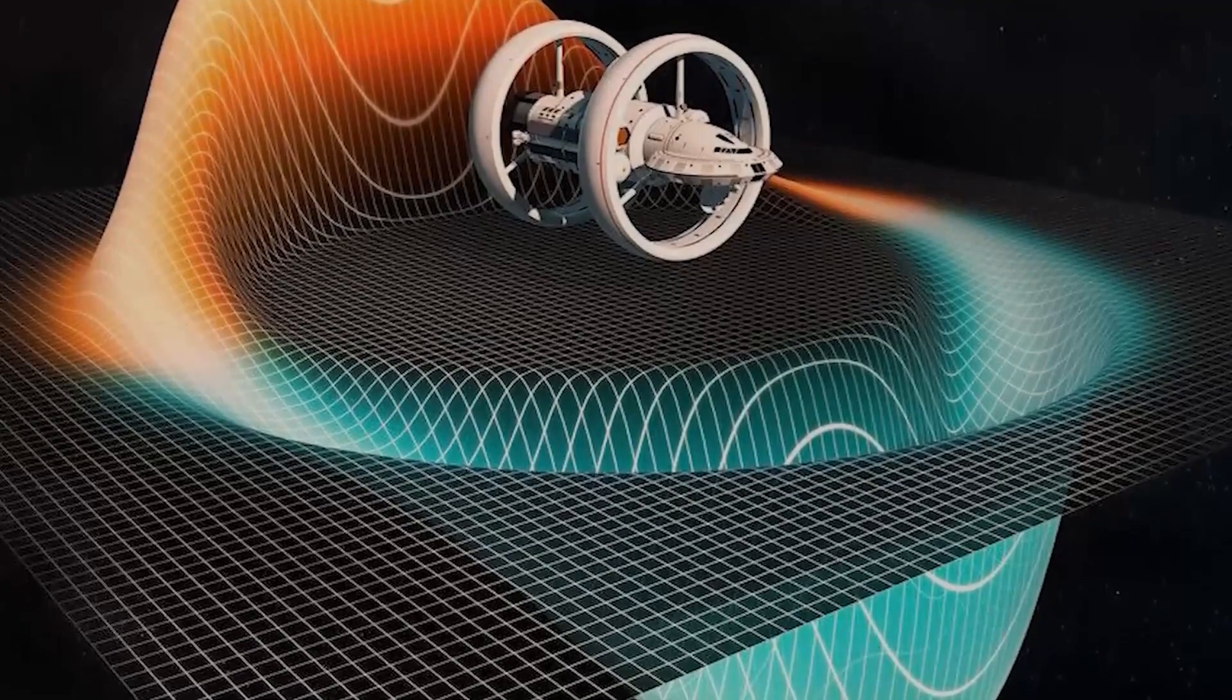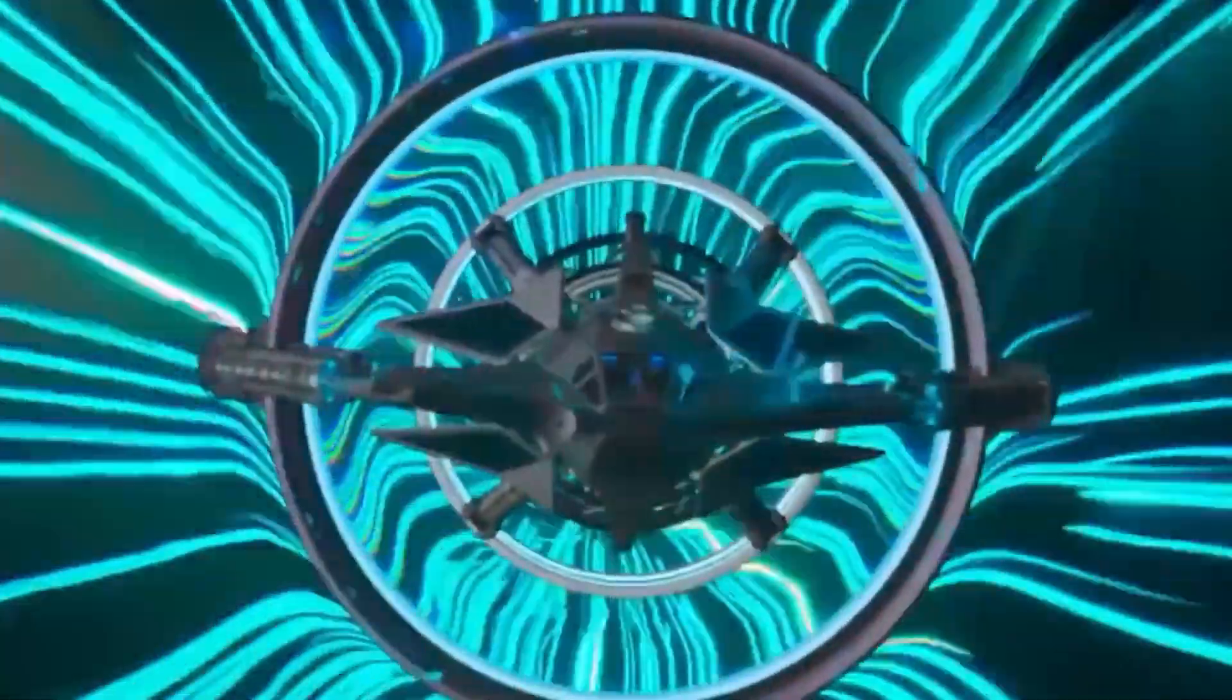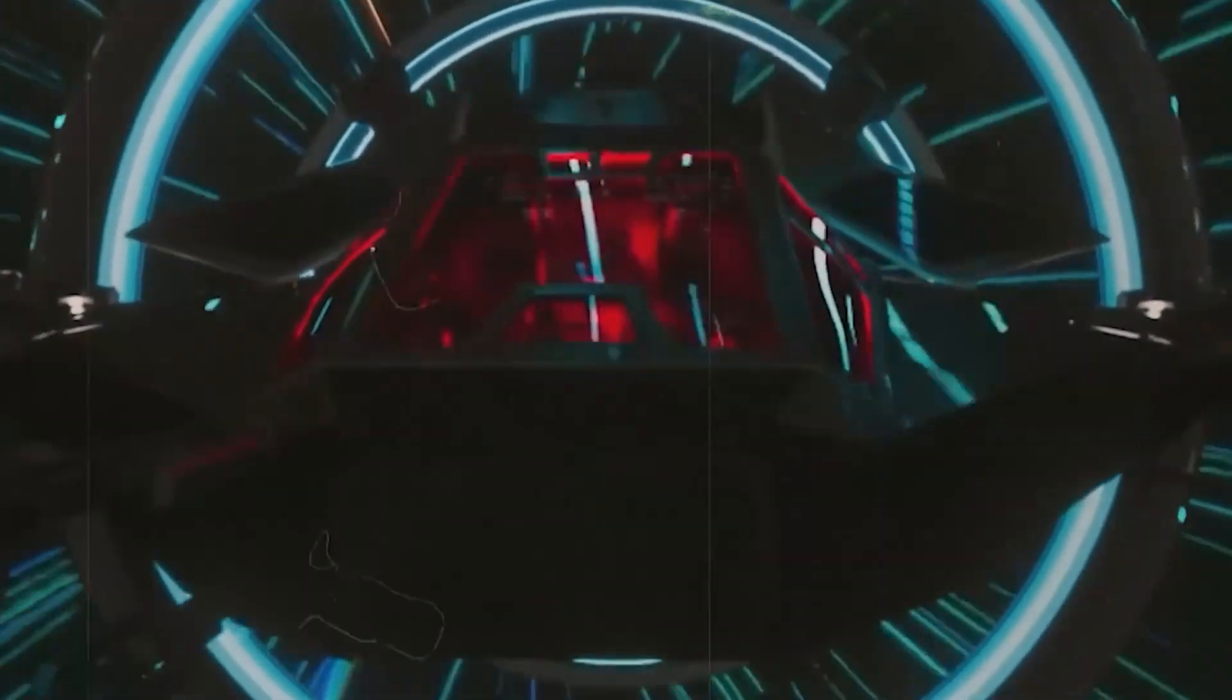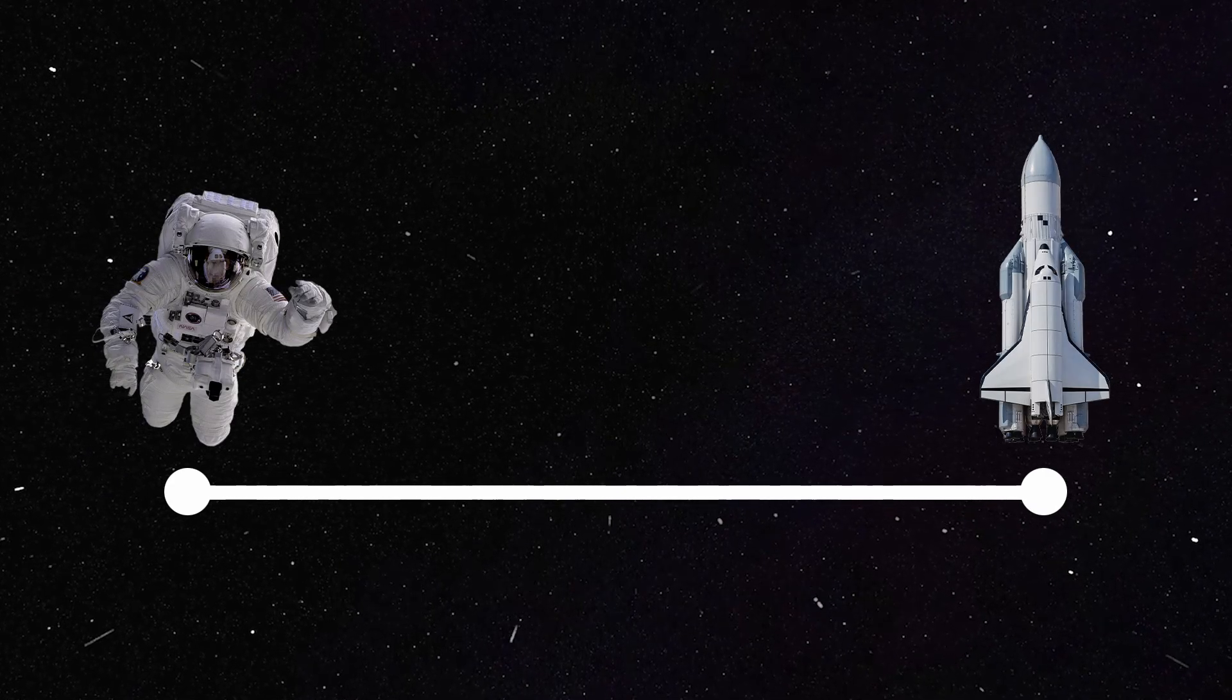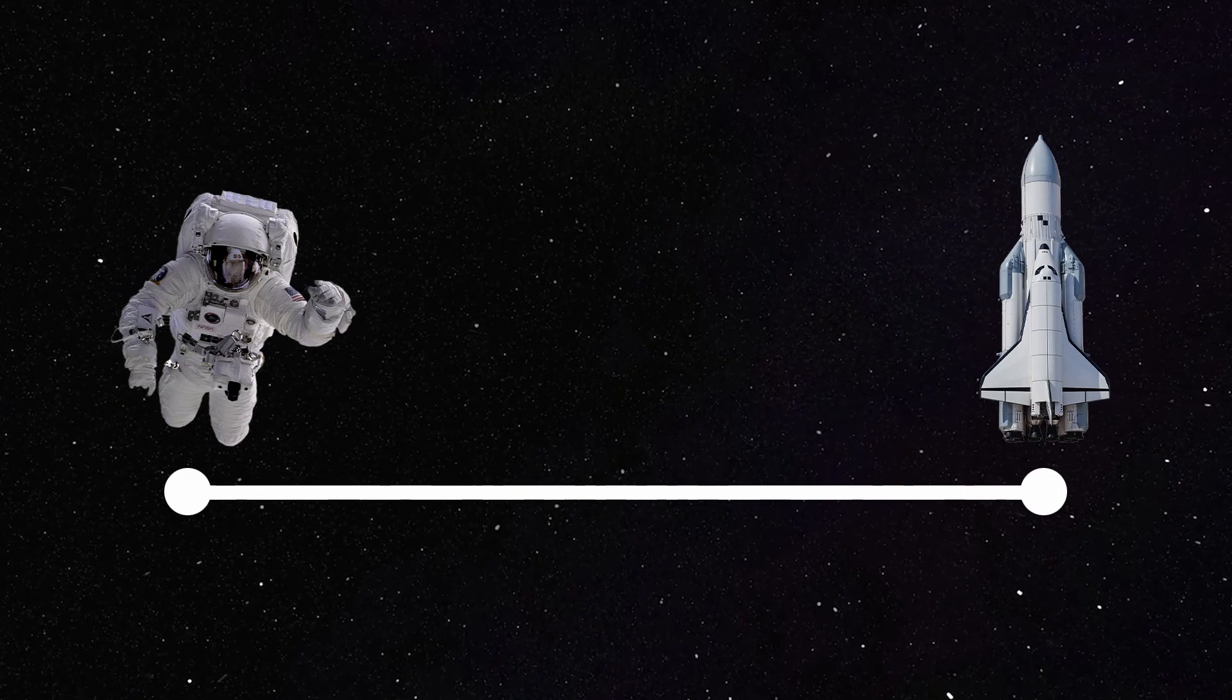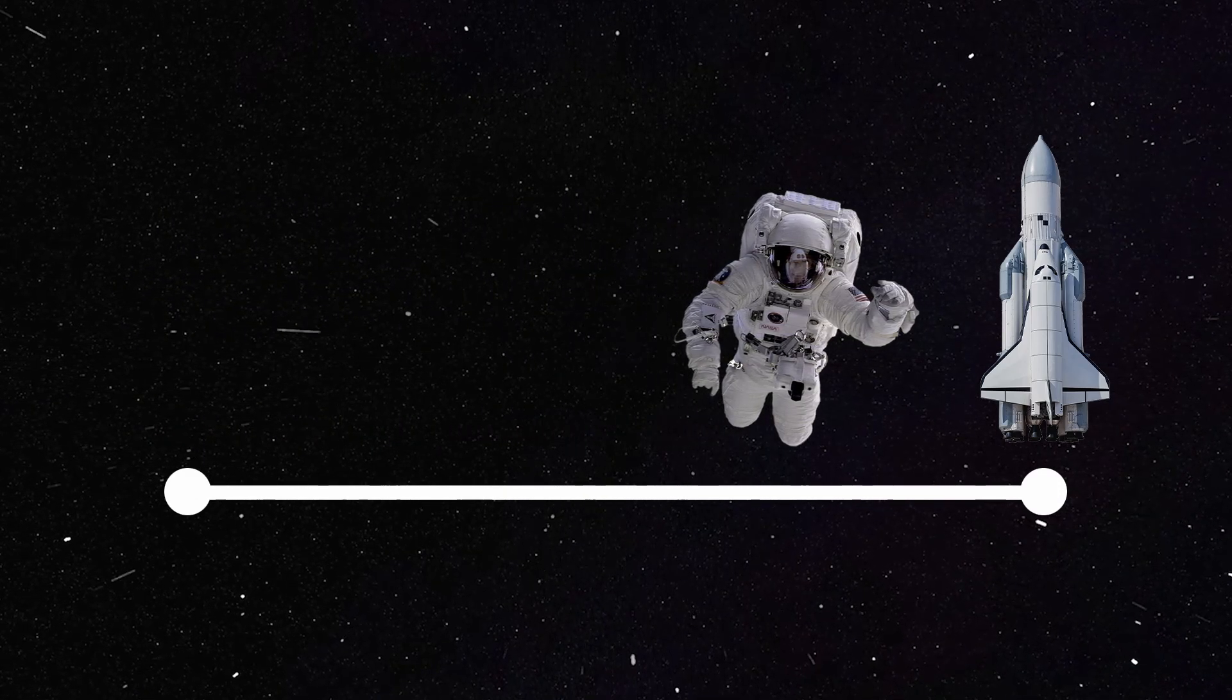Back in 1994, Miguel Alcubierre, a theoretical physicist, showed that the compression of spacetime in front of a spaceship and its expansion behind it is mathematically quite possible within the laws of general relativity. So, what does that mean for a spaceship with this technology? Here's an example. Imagine that the distance between two points is 10 meters. If you are standing at point A, and can move at 1 meter per second, it will take you 10 seconds to get to point B.